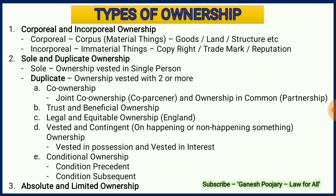The second subcategory is trust and beneficial ownership. The trustee will have some ownership whereas the beneficiaries will also have ownership — that is the second category of duplicate ownership. The third one is legal and equitable ownership, which is available only in England, where ownership is granted on a legal or equitable basis.